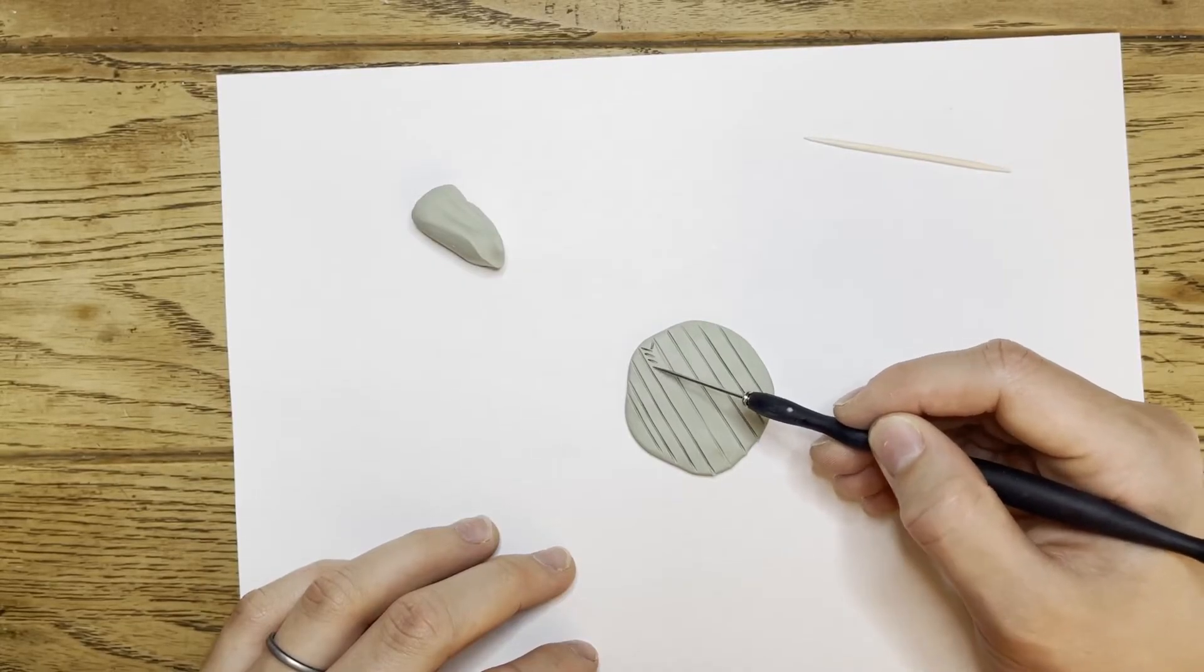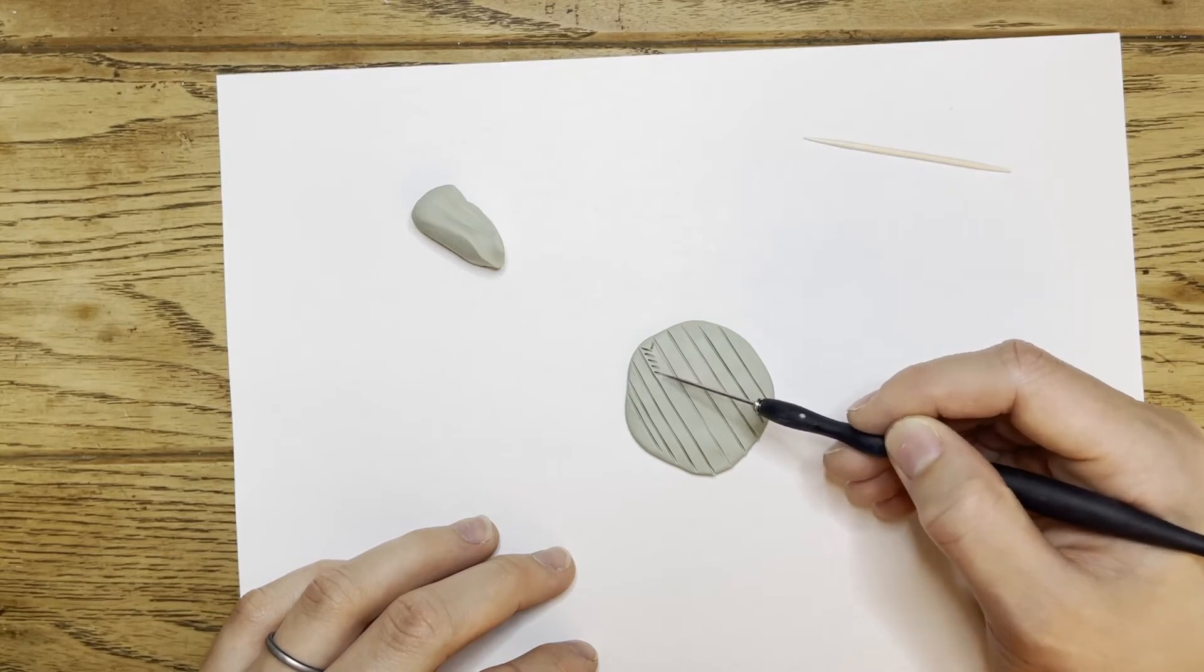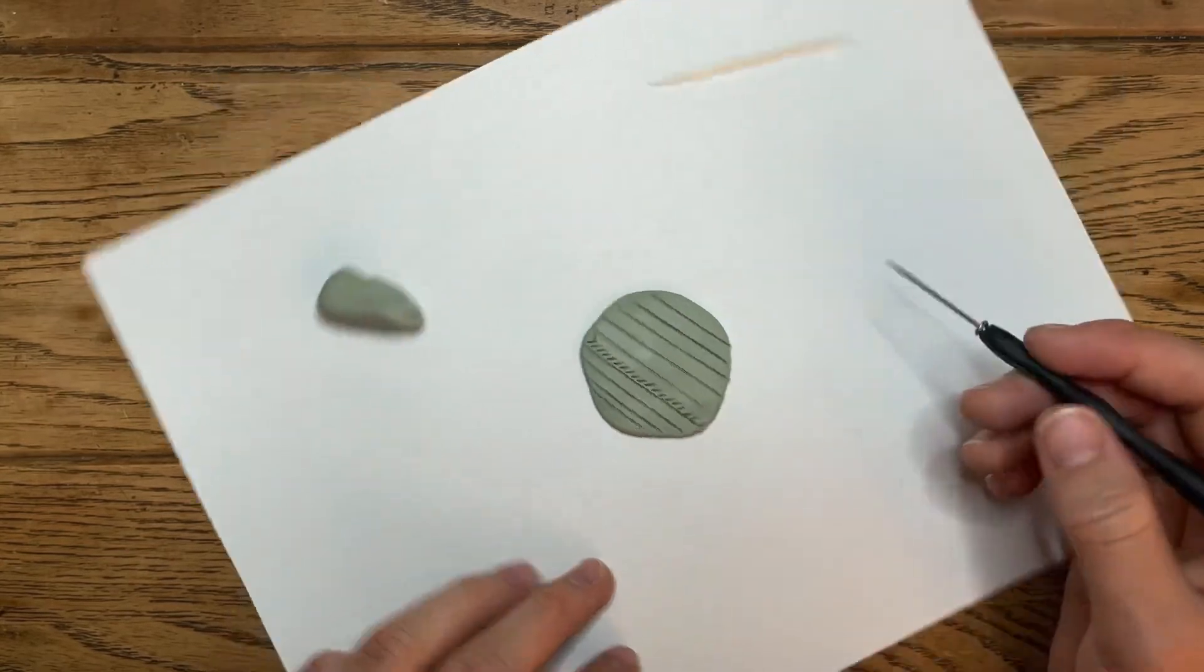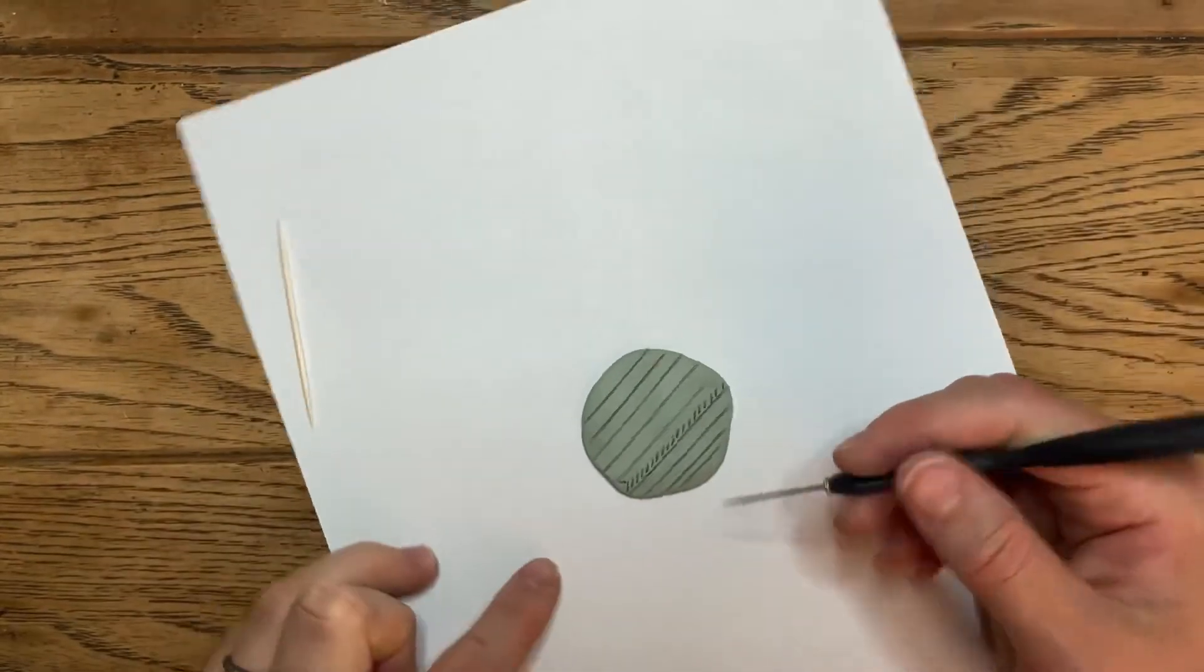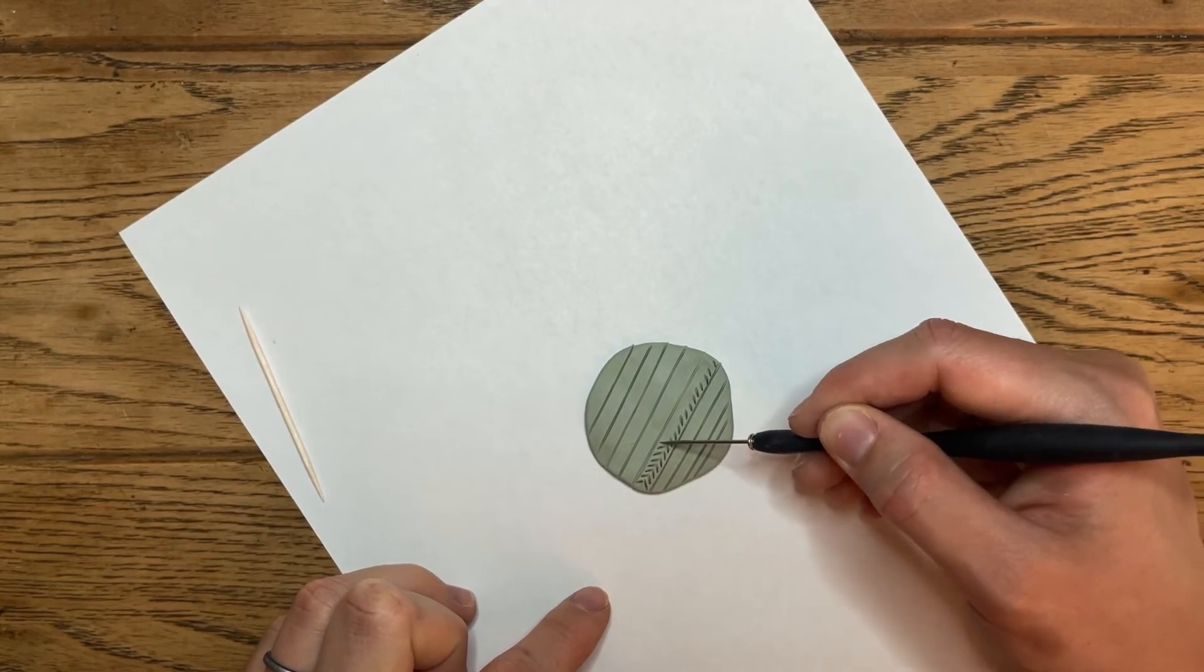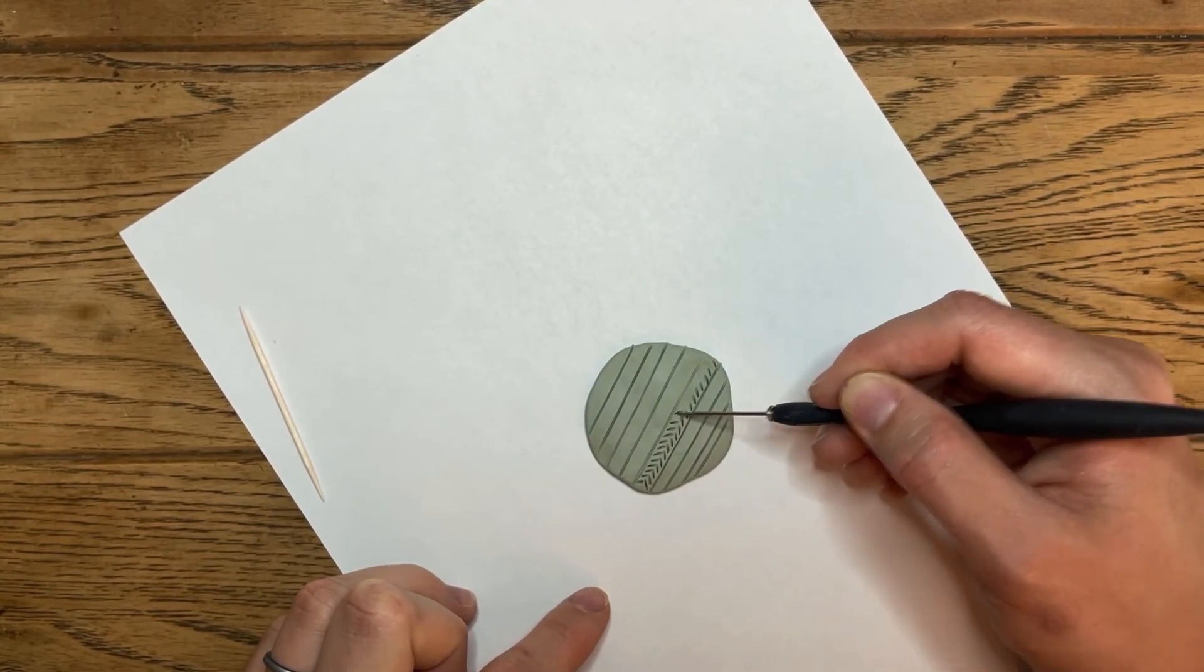I'm working my way down, and then I usually flip it over to do the other side like so. And I just try to match each of the lines up, and it takes a little bit of patience. But if you want to get this look, it's pretty fun.